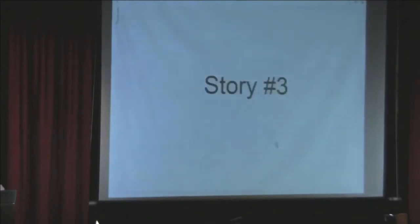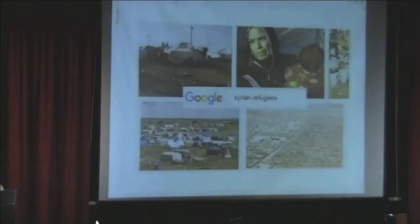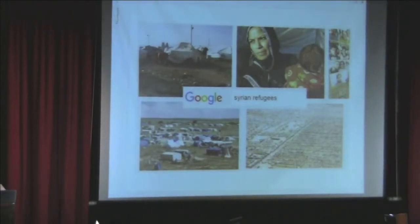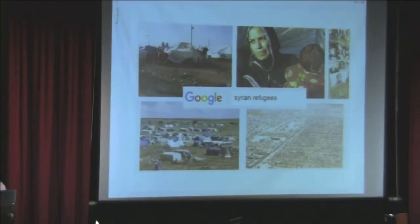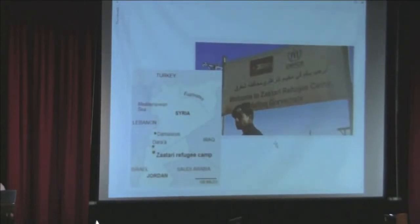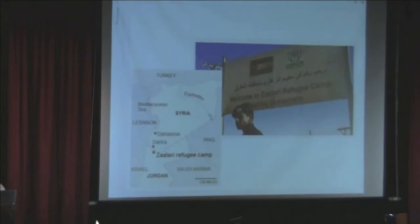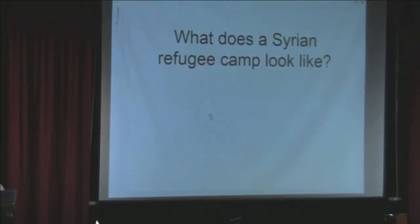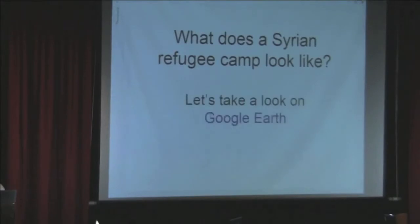My third story is about what's going on right now in Syria. Your students are probably aware of this — middle or high school students certainly, but probably even some lower school students. If you start doing some research you could learn about the Zaatari refugee camp. It's one of the larger camps, just south of the border with Syria. What does a Syrian refugee camp look like? Let's take a look.